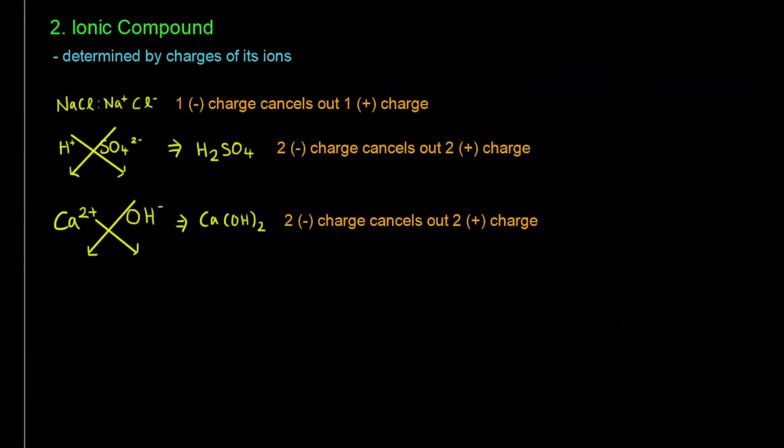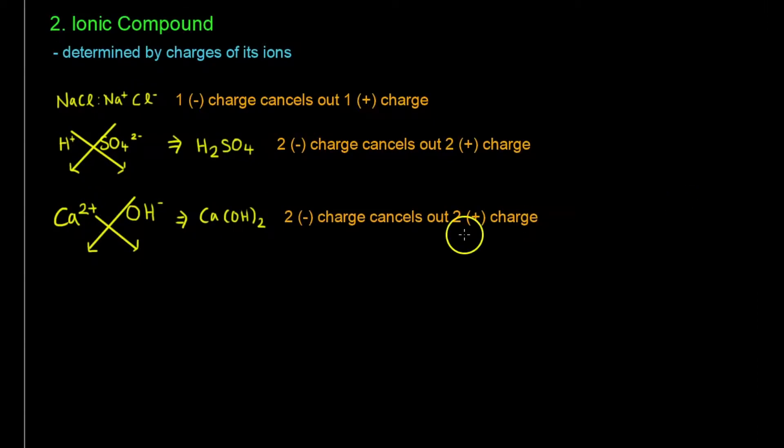Next we'll move on to ionic compound, which is determined by the charges of its ions. In the case of NaCl, it's made out of Na+ and Cl-. So we know that the plus charge will cancel out this negative charge, that's why it's neutral NaCl ionic compound.